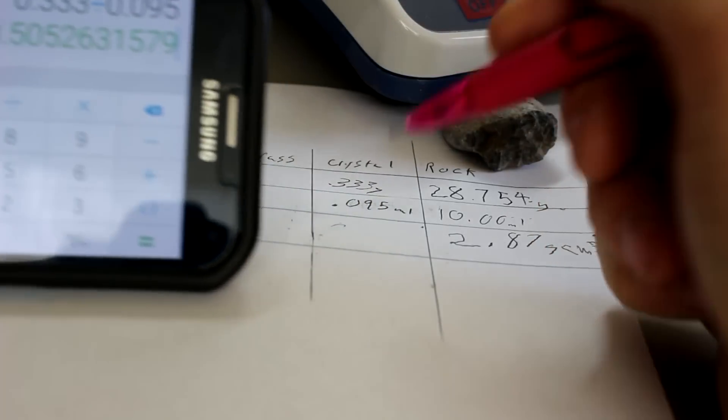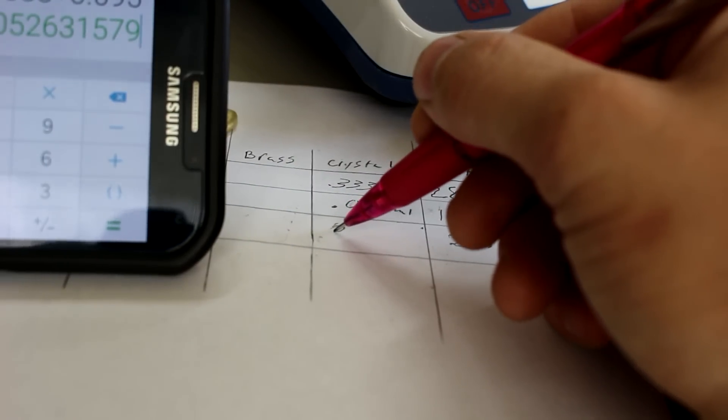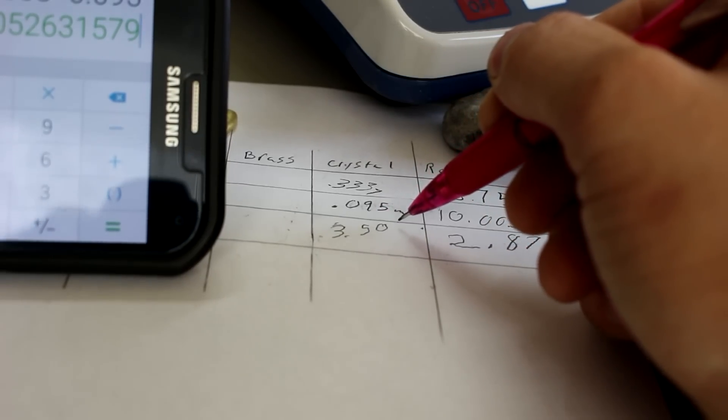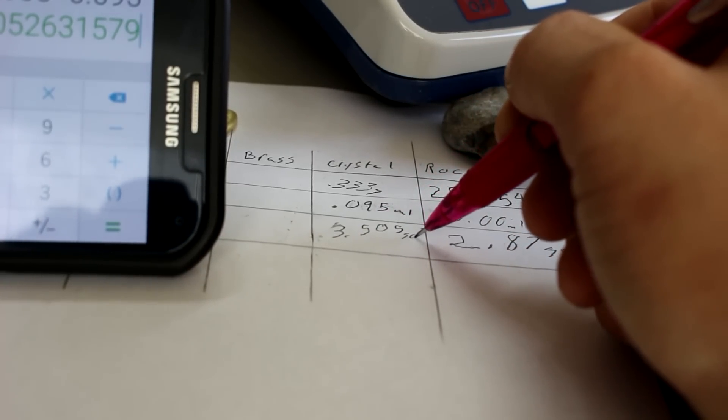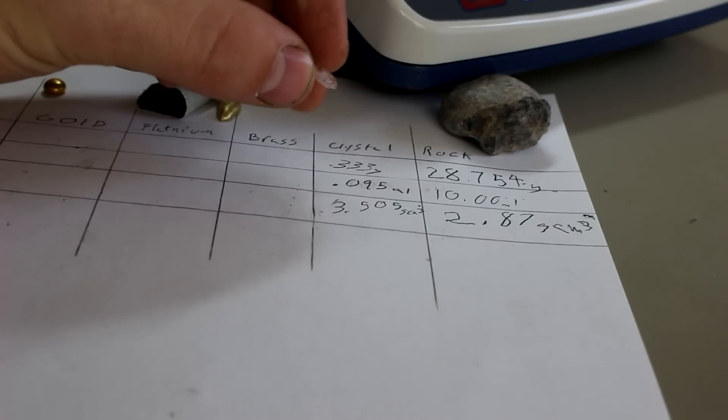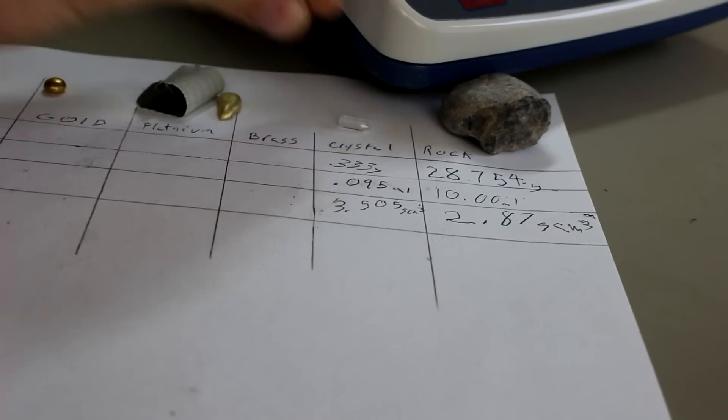Doing the math you can see that the density of this crystal is 3.505 grams per centimeter cubed. That value is exactly what I'd expect because this crystal is actually clear topaz.